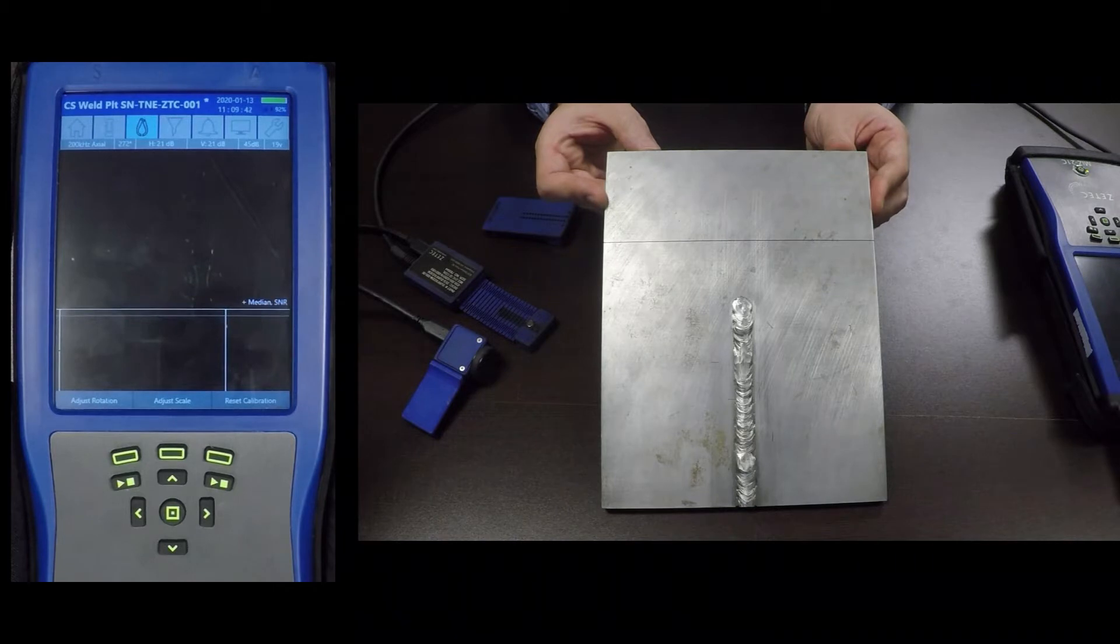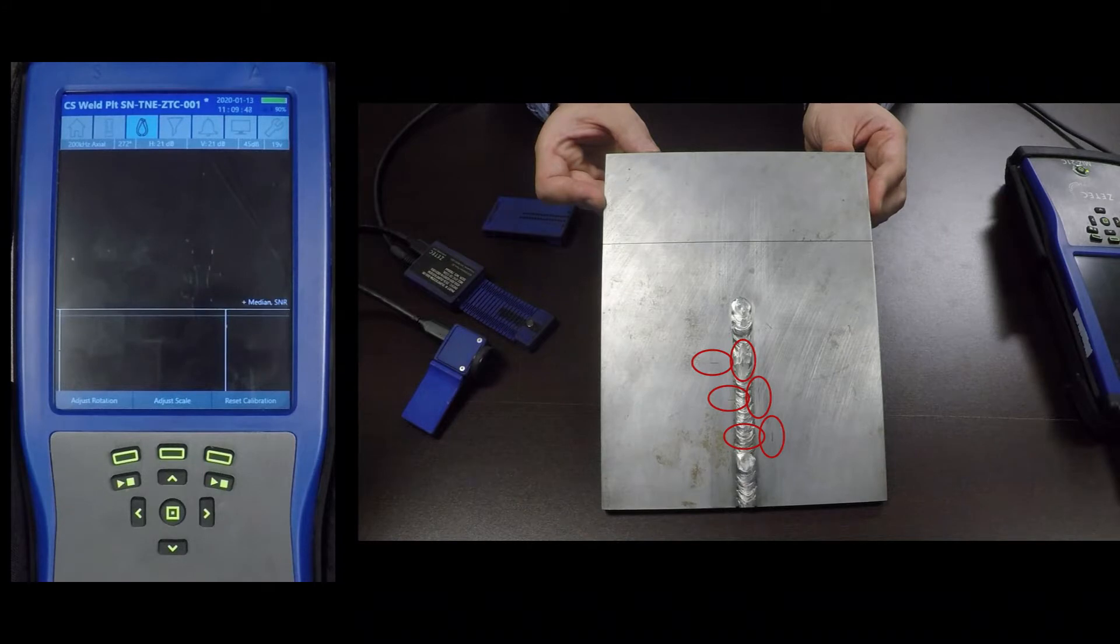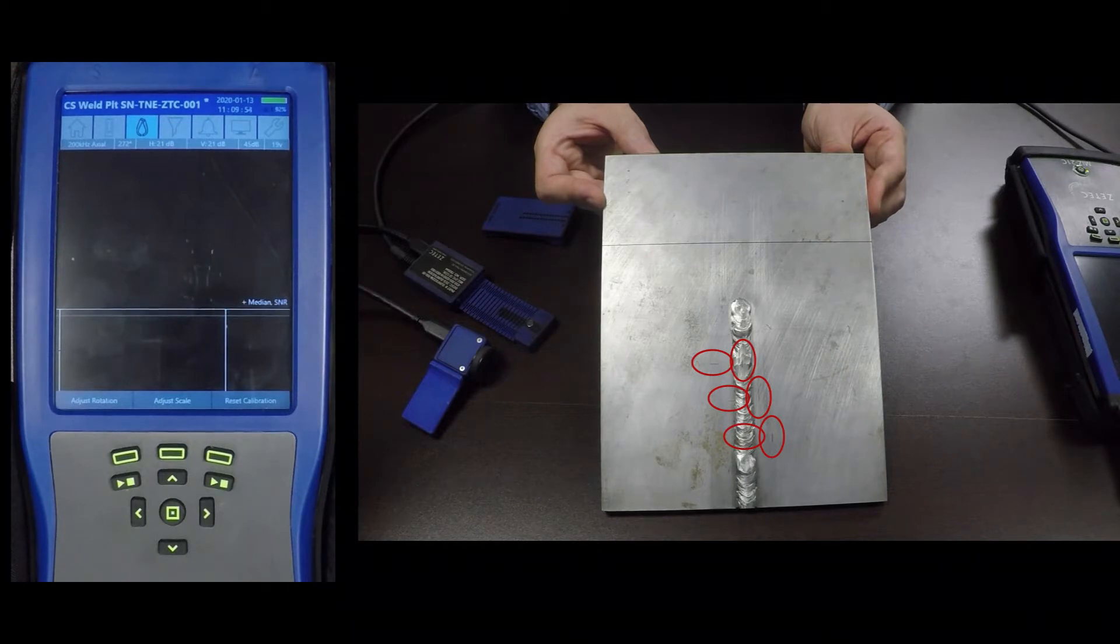It also has several EDM notches to represent flaws. It has three transverse and three axial EDM notches, one of each on the crown, in the toe, and in the heat affected zone.